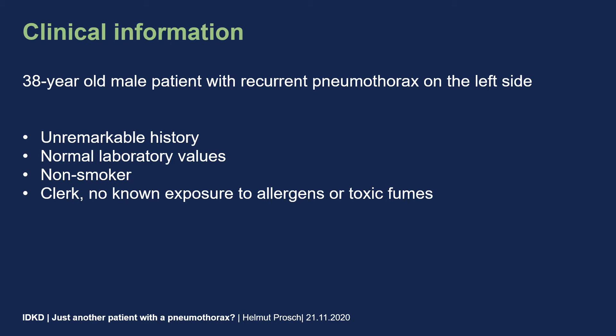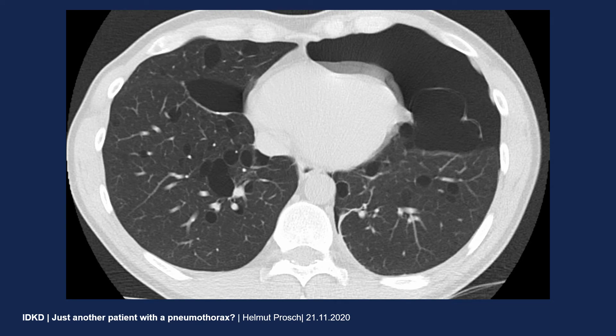Let's look at the CT scan. What you can nicely appreciate here is that most of the lung parenchyma looks quite normal. However, there are these very dark areas corresponding to very thin-walled cysts. Most of the cysts are either round or show a lentiform shape. If you look at the distribution, you will appreciate that most of these cysts are either close to a fissure or close to interlobular septae.